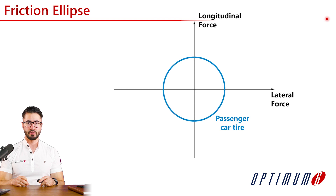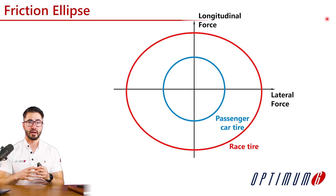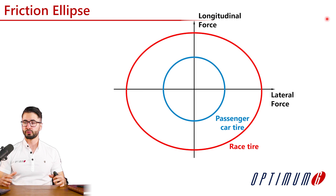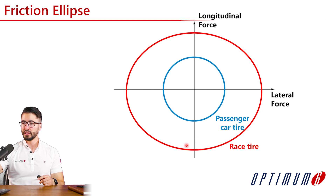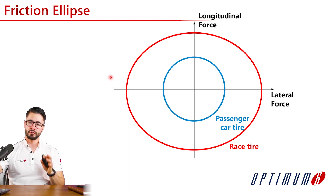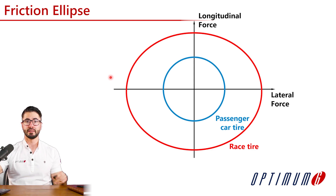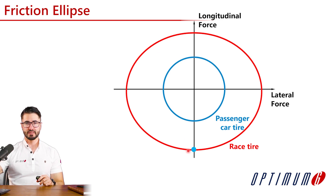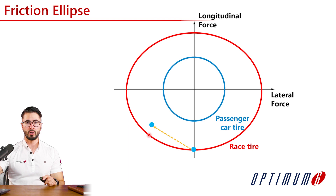We are looking first at a passenger car tire and then at a race tire, which can produce a lot more lateral and longitudinal forces. In order to exploit the combined grip, we should be exploiting not only the maximum braking grip and not only the maximum lateral grip, but also all the combined region in between. So if there is a driver that does not exploit enough, it would brake at the tire's maximum capacity but then not trail brake enough — not combine enough the forces — and you can see that it's not using all of the grip available.